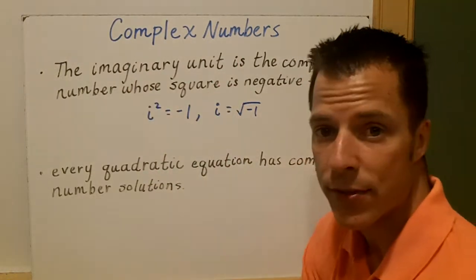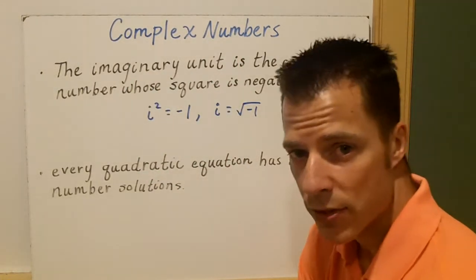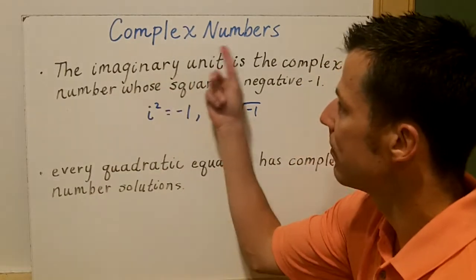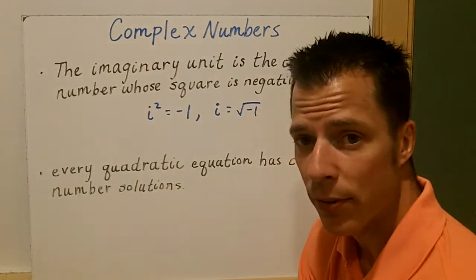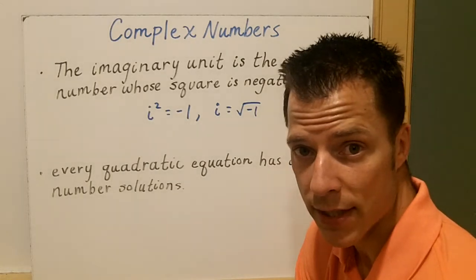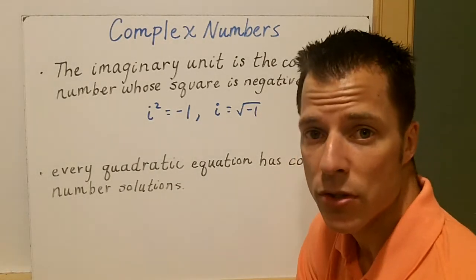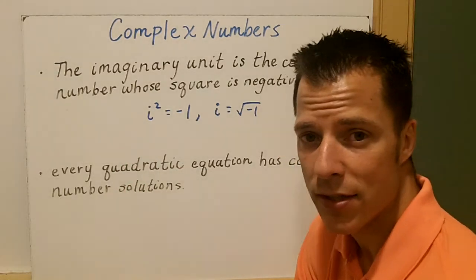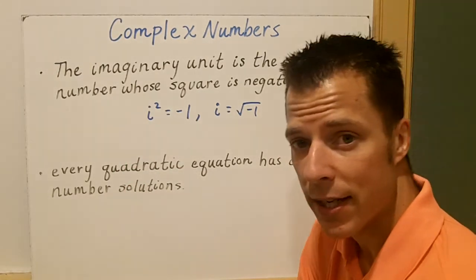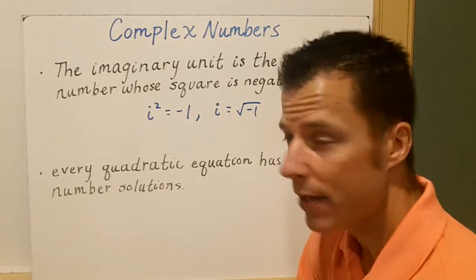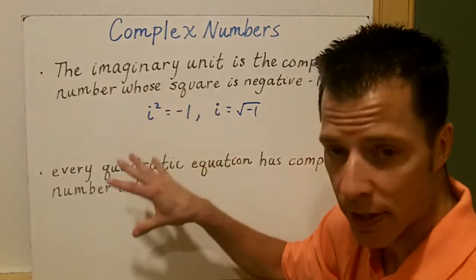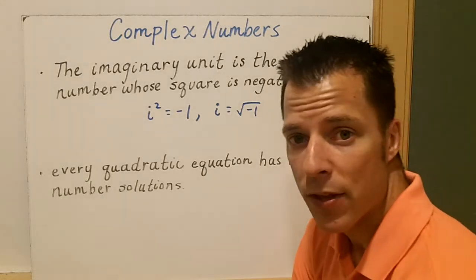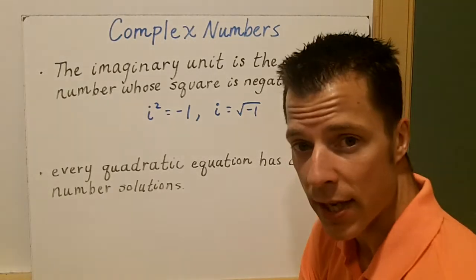Hey guys, we're going to be talking about complex numbers today. We've seen when solving quadratic equations we can get zeros, but complex numbers arise really when you have a parabola that doesn't cross the x-axis, so there appears to be no solution. What we're going to talk about today is complex numbers and how to deal with a quadratic that does not have real solutions. We're going to study complex numbers, figure out what they are, and it'll help us later on address those parabolas that don't cross the x-axis.